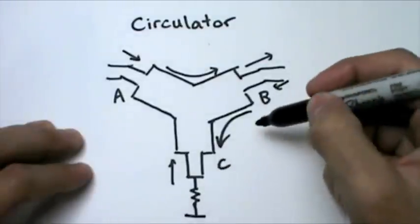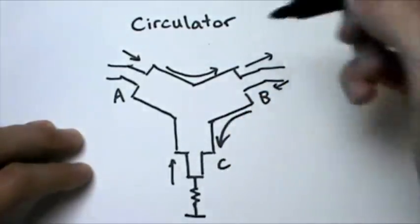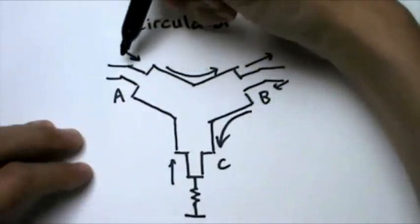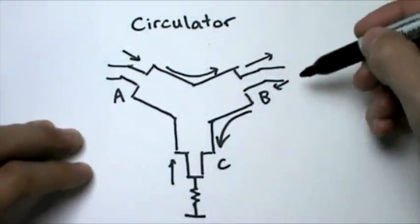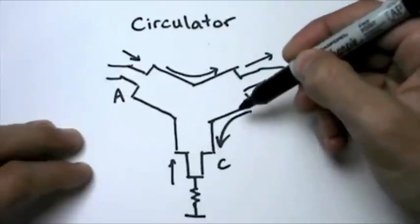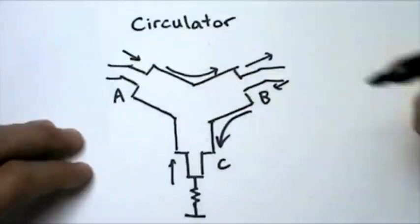So any signal that comes to this termination resistor will simply be absorbed. And so you can see that now if we send a signal into A, it will come directly out of B, but if we send a signal into B, it will come down to C and be absorbed and so therefore nothing will come back to A.